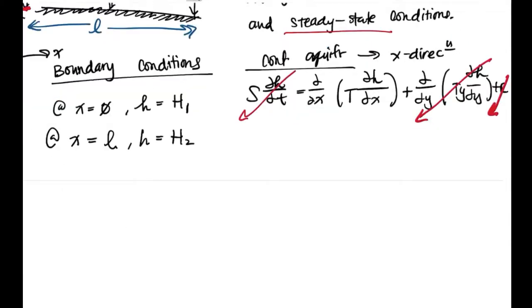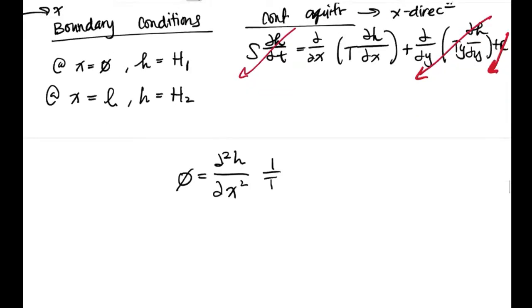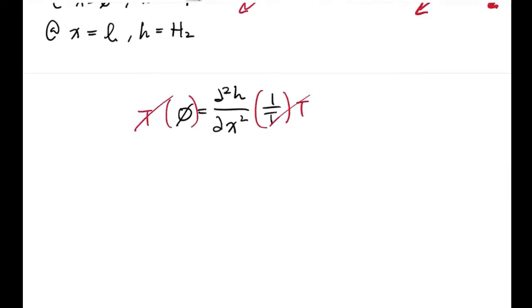We end up with 0 = (1/T)(d²H/dx²). If we multiply both sides by T, that gives us 0 = d²H/dx².